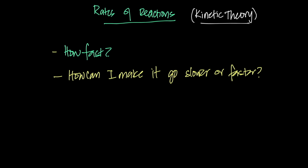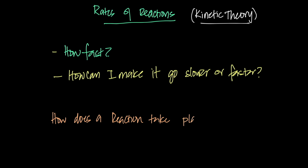To understand how fast a reaction takes place, or how you can make it go faster or slower, you first have to study how a reaction takes place. We will talk about that first, then about how we can change and measure the rate. We'll also look at practical ways of measuring different rates of reaction — how you could do it in the lab, ATPs, and in real life.